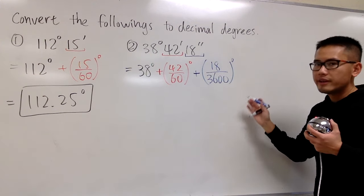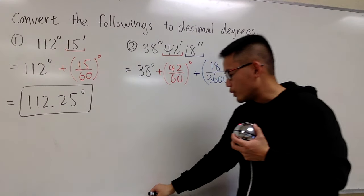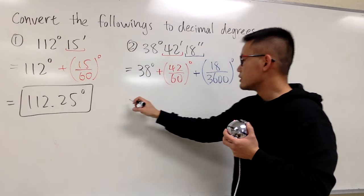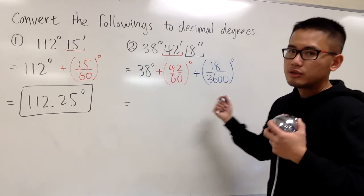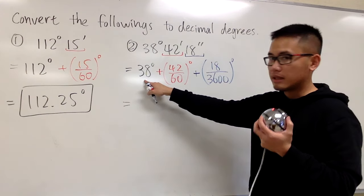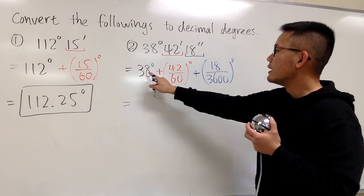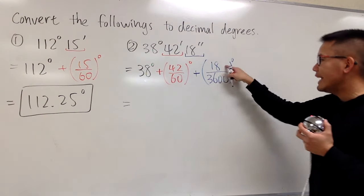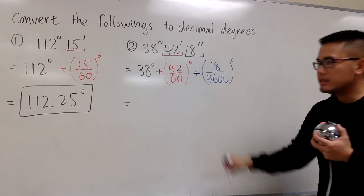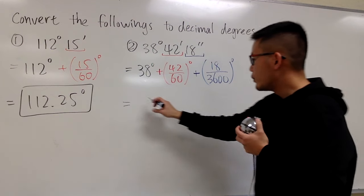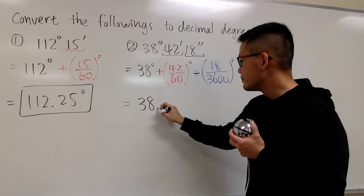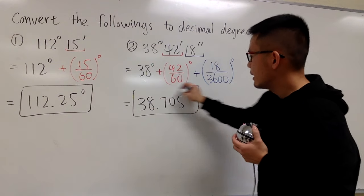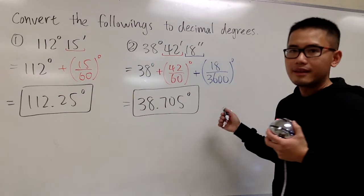This is the computation we have to do. Just put everything into the calculator. So it's 38 plus 42 over 60, plus 18 over 3600. All in all, we will end up with 38.705 degrees. And that's it.